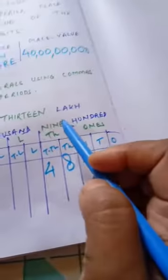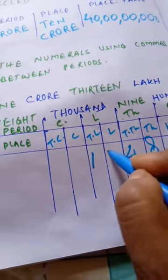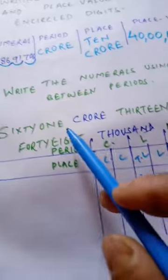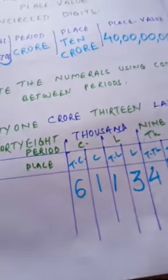And now in lakh period, it is written 13 lakhs. So in lakh period, it is 13 lakh. And in crore period, it is 61 crore.